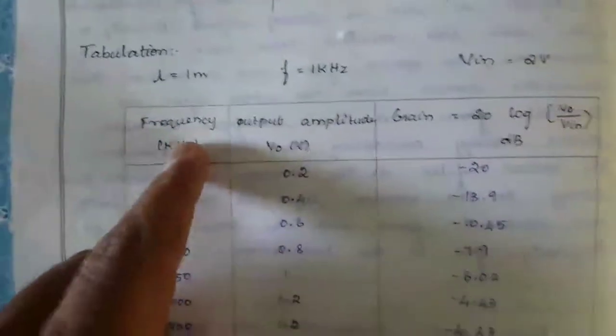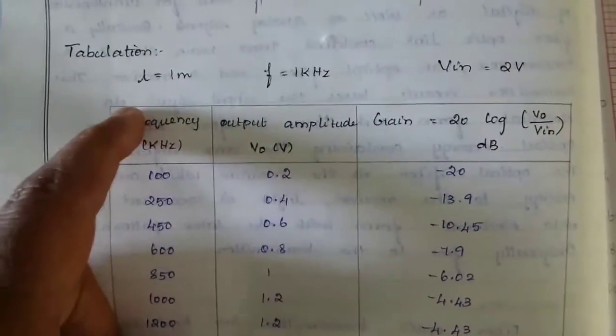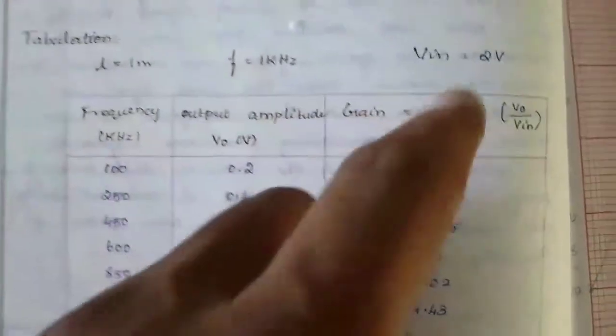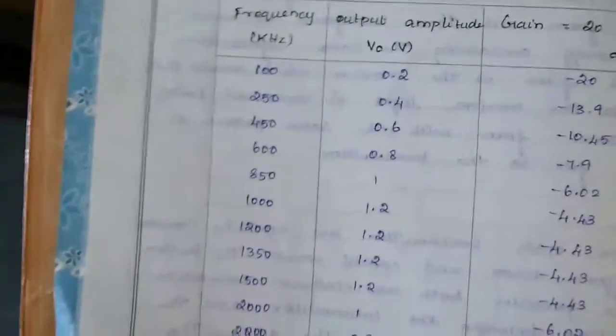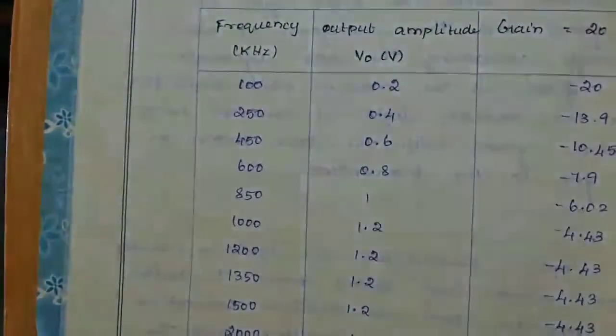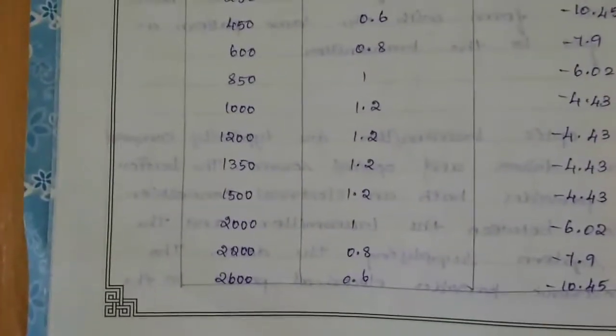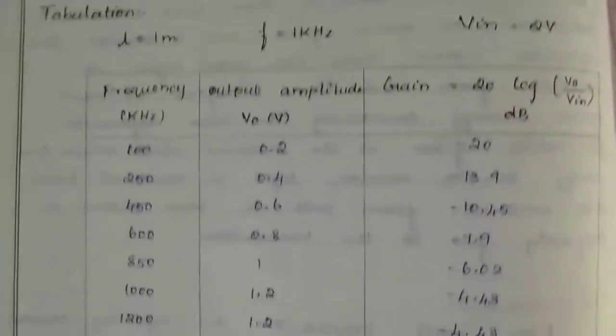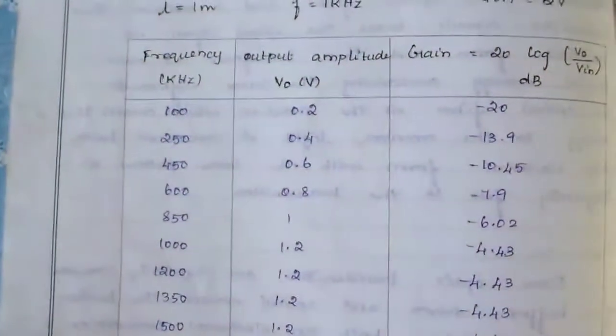Keeping the length of the fiber at 1 meter, frequency is 1 kHz, and input voltage is 2 volts. Now we vary the frequency from 100 kHz to 2600 kHz, and the output is noted from the CRO.